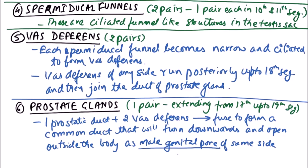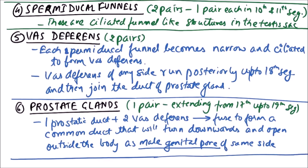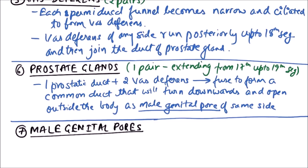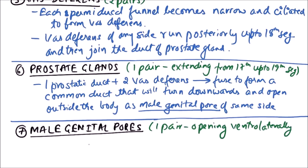This is a pair of prostate glands in the 17th up to 19th segment. Male genital pores are one pair, opening ventrolaterally in the 18th segment.